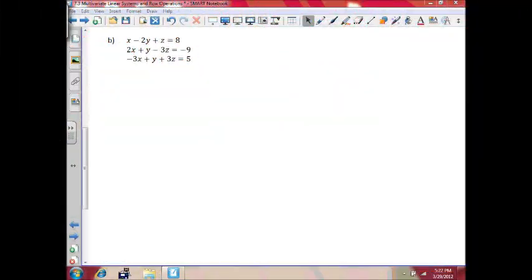Moving on to example B. Again, we need to put this in augmented matrix form. So we're going to start by putting the coefficients of our variables like so. Now again, we have a 1 here, so we're good on that row.